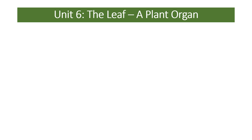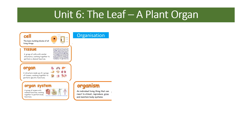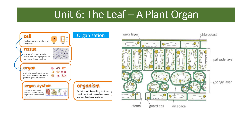You need to know about the structure of a leaf and how it's adapted. A leaf is an example of a plant organ — an organ is a group of tissues that work together with the same function. Lots of cells make a tissue; lots of tissues make an organ. In a plant, organs could be the leaf, the flower, or the roots, and they all have different jobs.